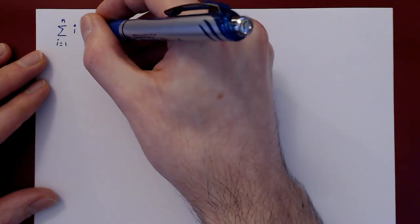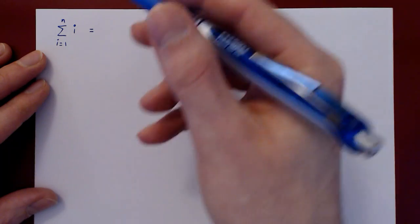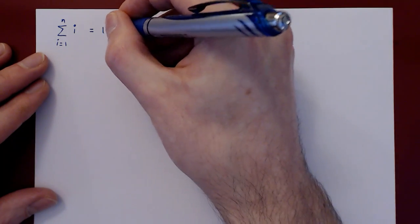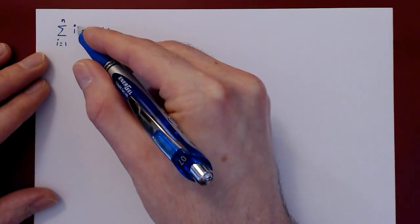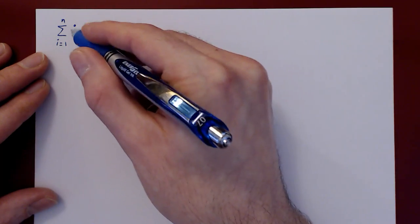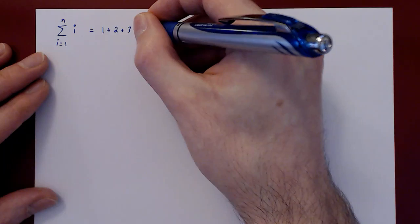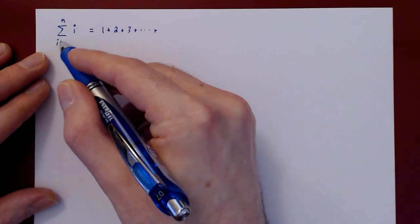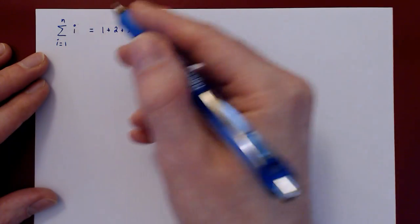Let's expand this sum out to get a feel for it. So when i is 1, i is 1, plus then i is 2, plus 2, then i is 3, plus 3, all the way up to i being equal to n, plus n.